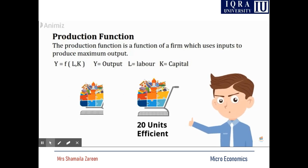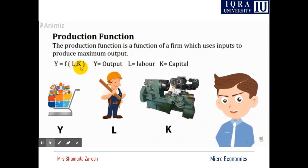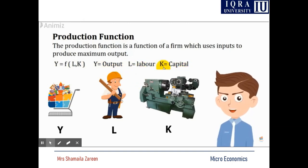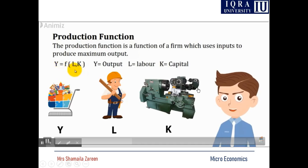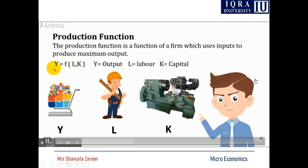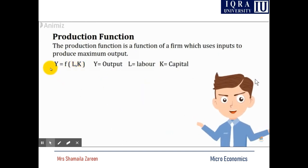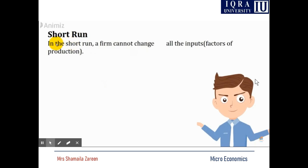The production function produces 20 units of output in the given example. This is called the production function, understood through the equation Y = f(L, K), where Y represents output, L represents labor, and K represents capital. When we increase labor and capital, our output also increases. This equation represents the relationship between output and input — output depends on input. When inputs increase or decrease, output also increases or decreases.